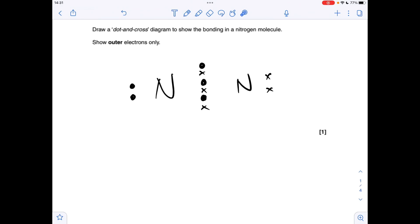Okay, so I'll make a start. A dot and cross diagram for the bonding in the nitrogen molecule. So nitrogen's in group 5, so we'll need 5 of each type of electron.